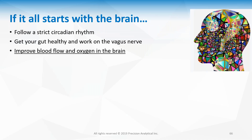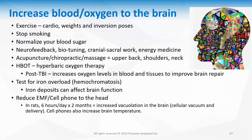For brain support: follow a strict circadian rhythm — light in the morning, darkness at night, screens off at night (or wear blue light blocking glasses and use night mode). Get your gut healthy and work on the vagus nerve. Improve blood flow and oxygenation to the brain through exercise — cardio and weights — inversion poses, stopping smoking, normalizing blood sugar, neurofeedback, bio tuning, cranial sacral work, energy medicine, acupuncture, chiropractic, massage focusing on the upper back, neck, and shoulders.